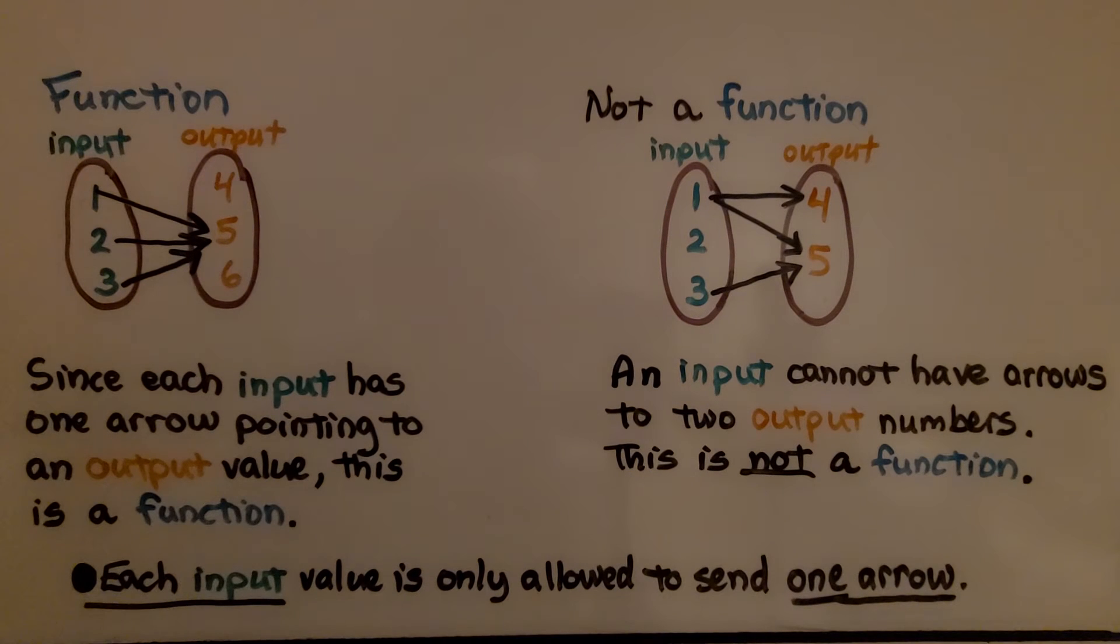Now let's look at these. Here we have a function. We have our input and our output, and if we look at our input, the 1 is sending one arrow, the 2 is sending one arrow, and the 3 is sending one arrow. Each input is only sending one arrow. Now they're all going to the 5 for the output, but that's okay because they're each sending one arrow. Since each input has one arrow pointing to an output value, this is a function.